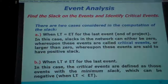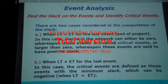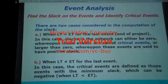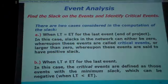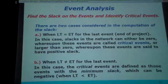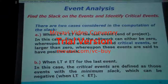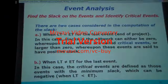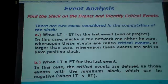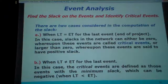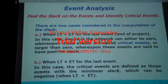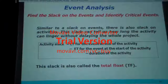How to calculate — two cases in the computation of the slack. When late time equals early time for the last event, end of project: in this case, slacks in the network can either be zero — where they are critical — these events are called critical events. Or other than zero, upon which these events are said to have a positive slack. When late time does not equal early time for the last event, in this case, the critical events are those events with the minimum slack, which can be negative when late time is less than early time. All these can be clear after examples.